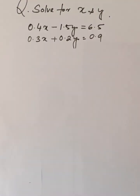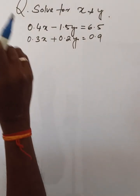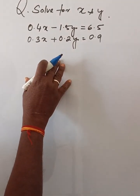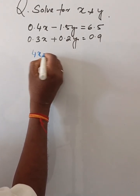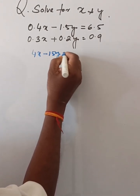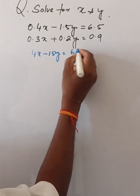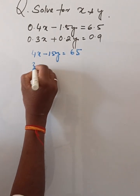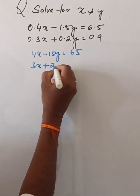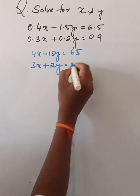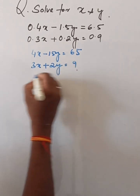Solve for x and y: 0.4x minus 1.5y is equal to 6.5, and 0.3x plus 0.2y is equal to 0.9. Multiplying each equation by 10, we get 4x minus 15y is equal to 65. In the second case, this is 3x plus 2y is equal to 9.